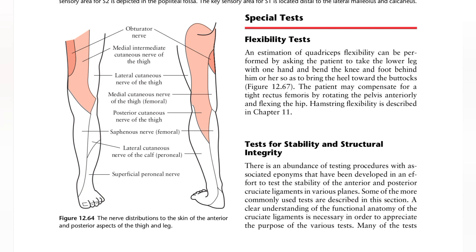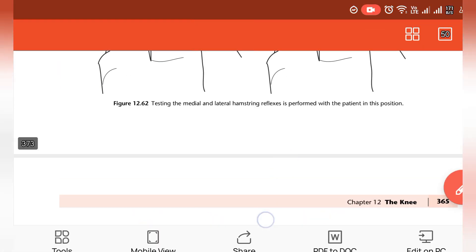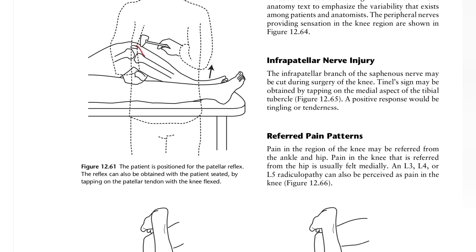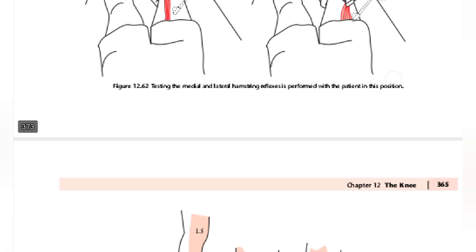This is the cutaneous supply of the anterior and posterior aspect of the knee. We have past sensation in front of the nerve injury — the infrapatellar branch of the saphenous nerve, which is often cut during surgery of the knee. A Tinel's test sign may be obtained by tapping on the medial aspect of the tibial tubercle; a positive response is tingling or tenderness. Finally, referred pain from the hip, medial side of the tibial, and L3, L4, and L5 radiculopathy can also present as knee pain.